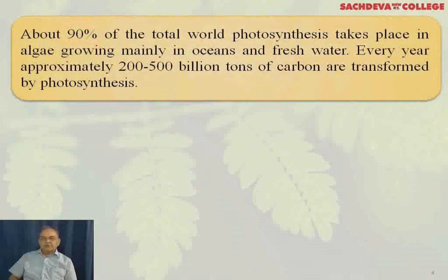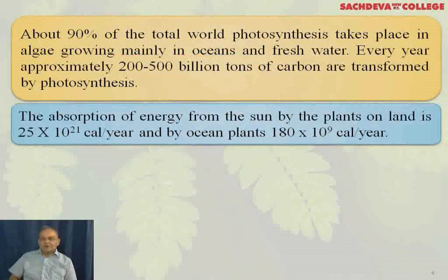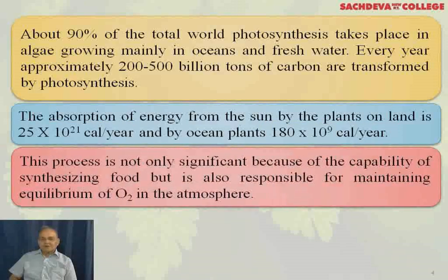About 90% of the total world photosynthesis takes place in algae growing mainly in oceans and freshwater. Every year, approximately 200 to 500 billion tons of carbon are transformed by the process of photosynthesis. The absorption of energy from the sun by land plants is 25 × 10²¹ calories per year, and by ocean plants is 180 × 10⁹ calories per year. This process is significant not only for food synthesis but also for maintaining the equilibrium of O2 in the atmosphere.